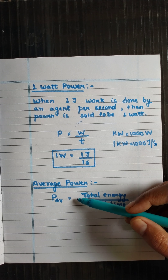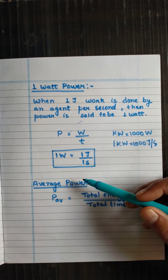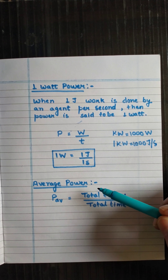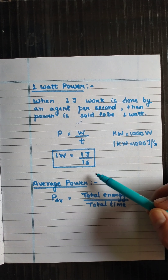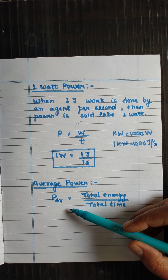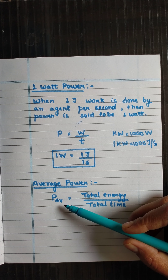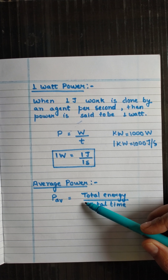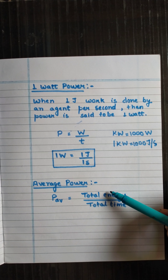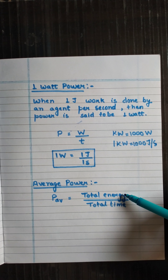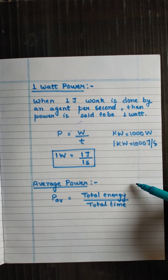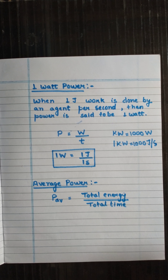About average power: if any agent is doing work at different rates at different intervals of time, then to calculate the power we use the term average power. We calculate average power by dividing the total energy consumed by the agent by the total time interval.